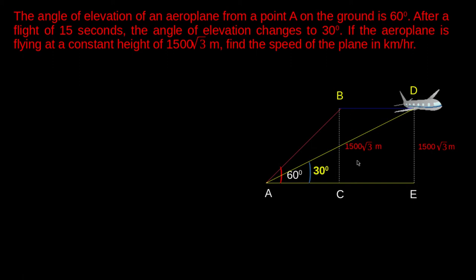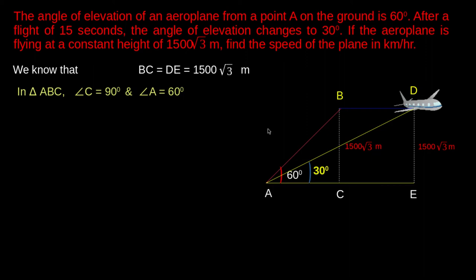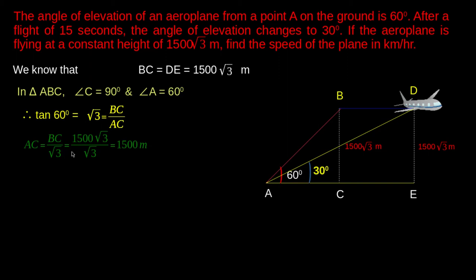To find the distance covered in 15 seconds, we have to subtract the value of AC from AE. First, let us find the value of AC by considering triangle ABC. The trigonometric ratio that relates side BC and AC for angle 60 degrees is: tan 60° = opposite/adjacent = BC/AC. We know that tan 60° = root 3. By cross multiplying, we get AC = BC/root 3 = 1500 root 3 divided by root 3, which equals 1500 meters.